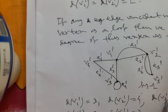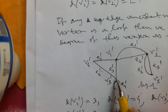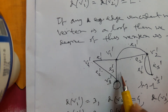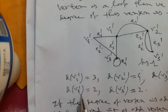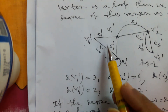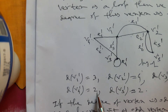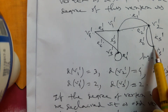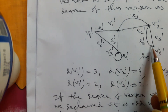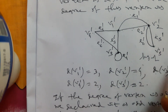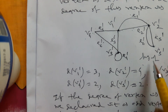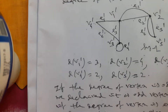Degree of V_3 will also be 4, because one loop contributes 2 edges and there are two non-parallel edges. Degree of V_4 is 2, as it has two non-parallel edges. Degree of V_5 is also 2, as it has two non-parallel edges.